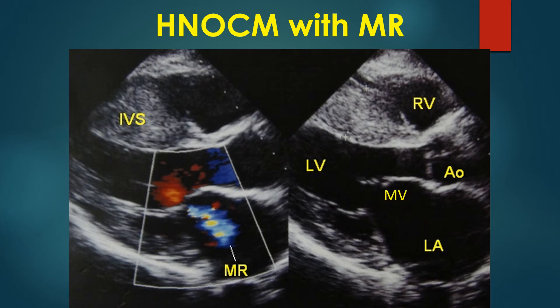The frame on the left side is a diastolic frame with the mitral valve open. The left atrium is dilated, twice the aortic diameter or more. The right ventricle and left ventricle are not enlarged. The left ventricular cavity may enlarge in the late dilated phase of hypertrophic cardiomyopathy.